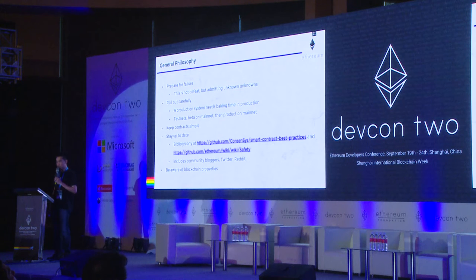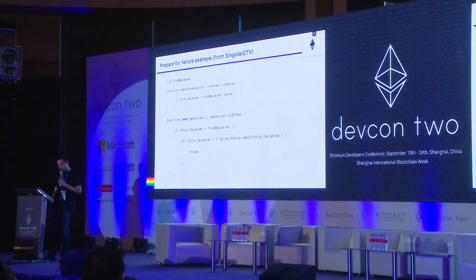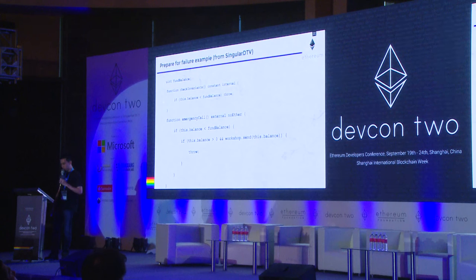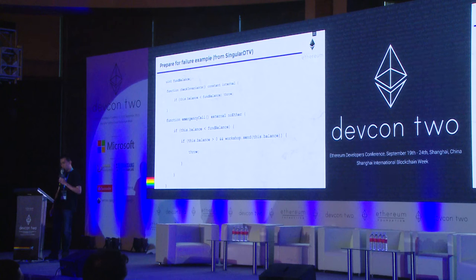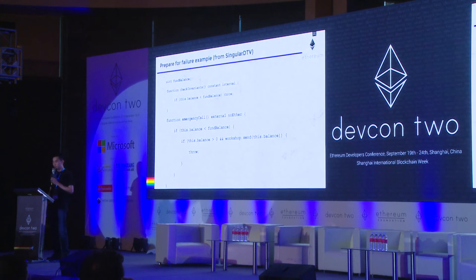Be aware of blockchain properties — that's what the rest of this talk relates to. Here's an example of preparing for failure. The contract keeps track of its expected fund balance. Check invariants throws if the actual balance of the contract is smaller than the expected balance, and this is called at the end of some of the key functions. The emergency call sends the balance to the workshop account only if the invariant is broken. Anyone can invoke the emergency call, and the plan is to have a server call it every second, so that if there is a breach, most of the funds can be sent to the workshop instead of being drained to an attacker.